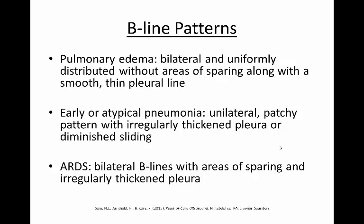There are different beeline patterns with different pathologies. In pulmonary edema, we can see bilateral and uniformly distributed beelines without areas of sparing, along with a smooth, thin pleural line. In early or atypical pneumonia, we can see a unilateral patchy pattern of beelines with irregularly thickened pleura or diminished lung sliding. In ARDS, we often see bilateral beelines with areas of sparing and irregularly thickened pleura.